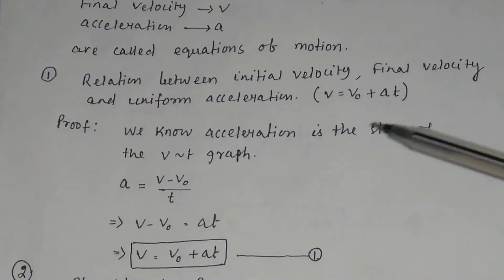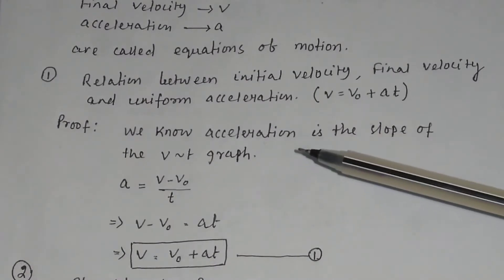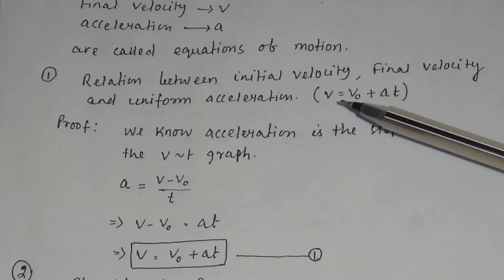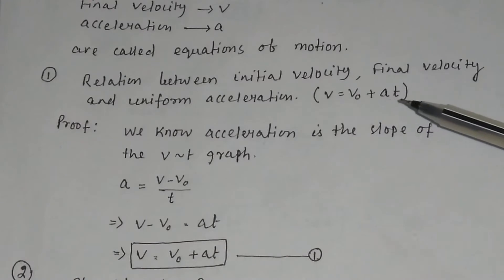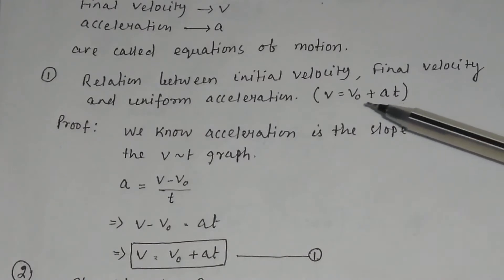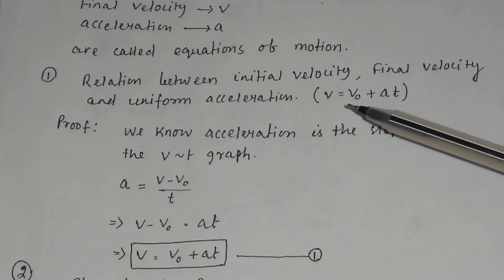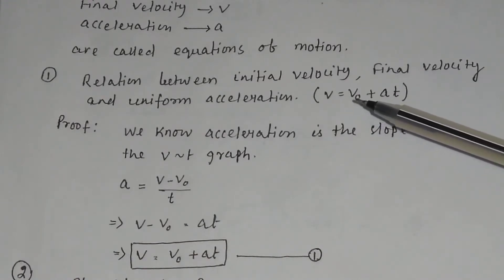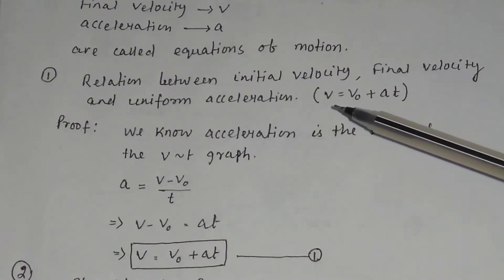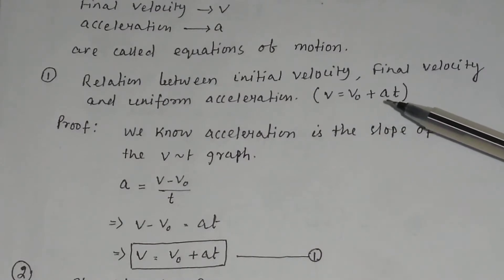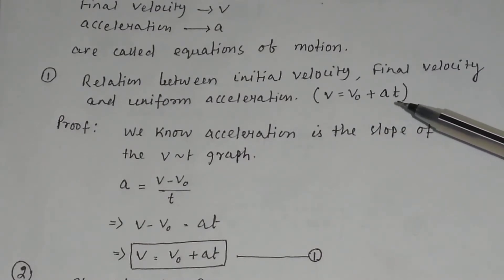First, let us deduce the equation of motion v equal to v0 plus a·t. This is the relation between initial velocity, final velocity, and uniform acceleration and t.